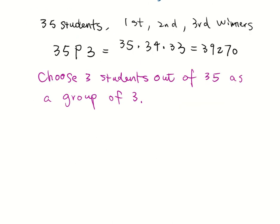Now I want to just choose 3 students out of the 35 students as a group of 3. Can I use the permutation here, 35P3? The answer is no, because for 35P3,